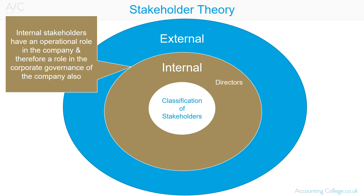Directors are responsible for running the company in the best interest of shareholders. The Company Secretary is responsible for company legislation compliance and for advising the board on corporate governance matters. Sub-Board Management are responsible for implementing board policy and running the company. They identify risks faced by the company, report concerns, enforce controls and monitor success.